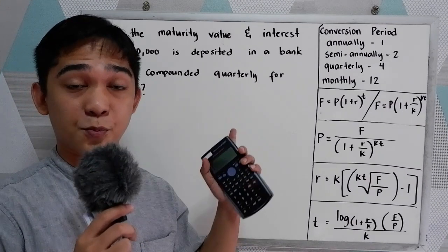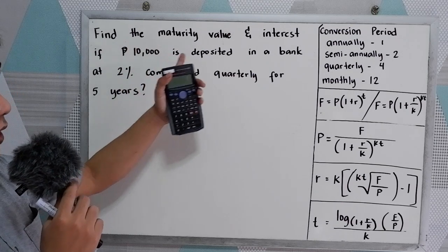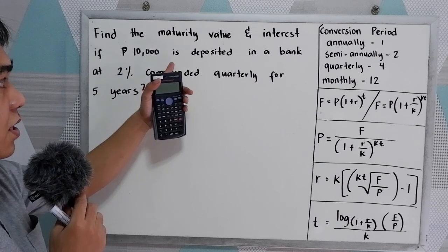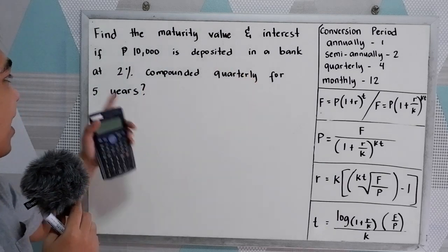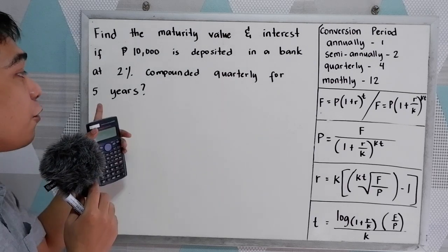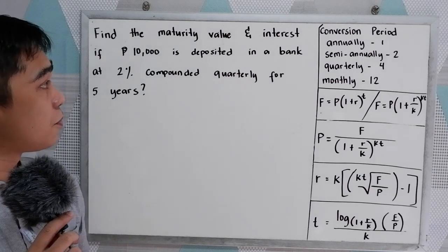Now let's solve this problem. Find the maturity value and the interest if P10,000 is deposited in a bank at 2% compounded quarterly for 5 years.